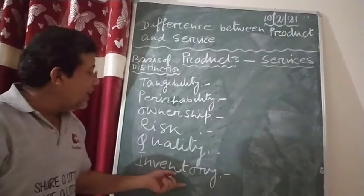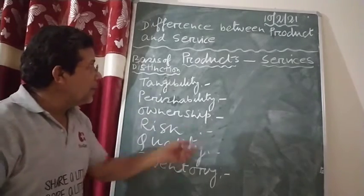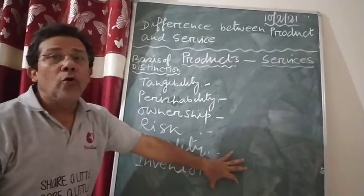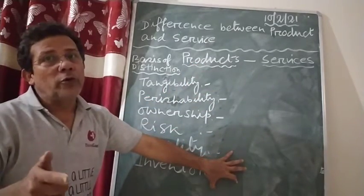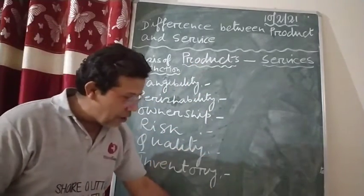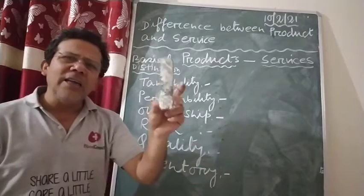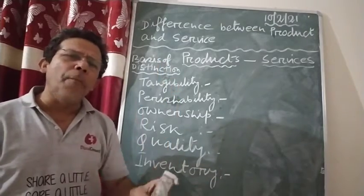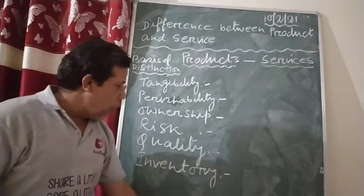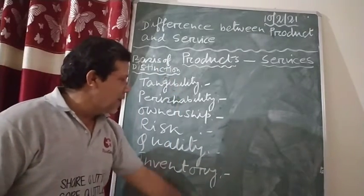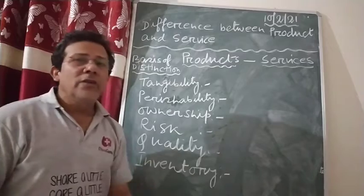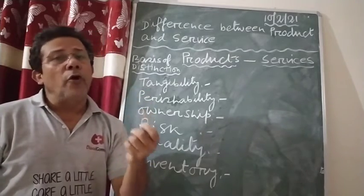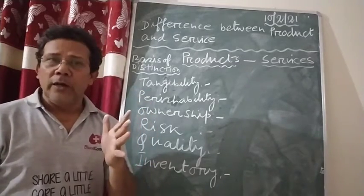The final point is inventory. Products can be stored for future use — for example, I have this duster and I can keep it for a long period of time. On the other hand, services cannot be stored for future use.